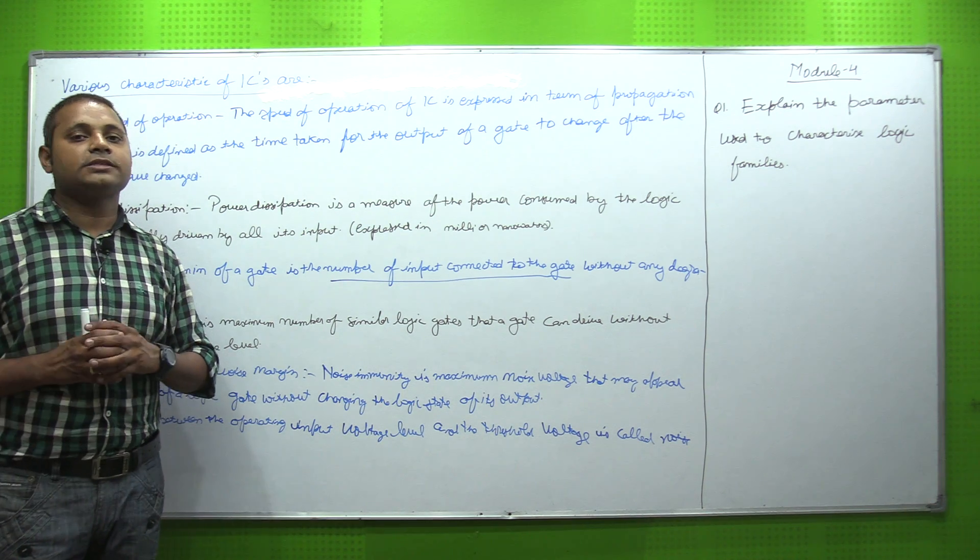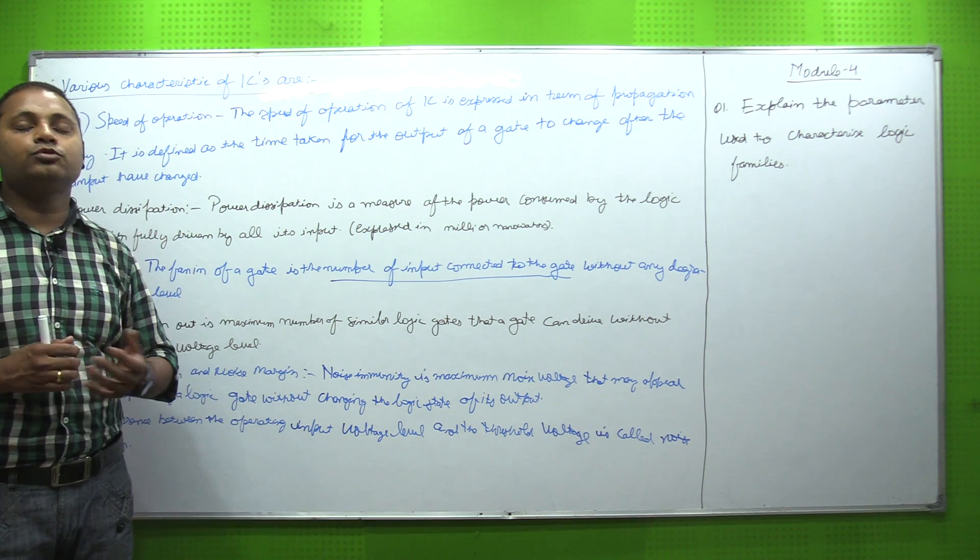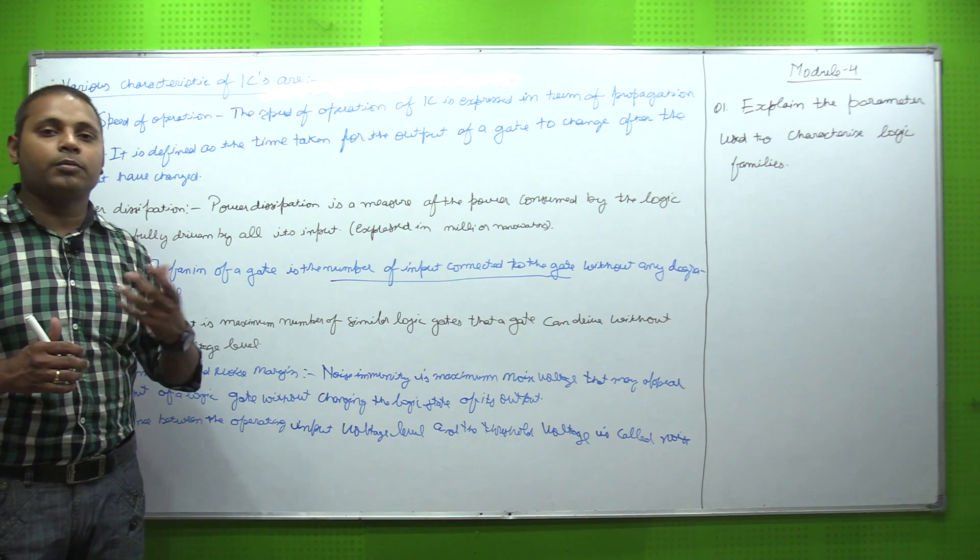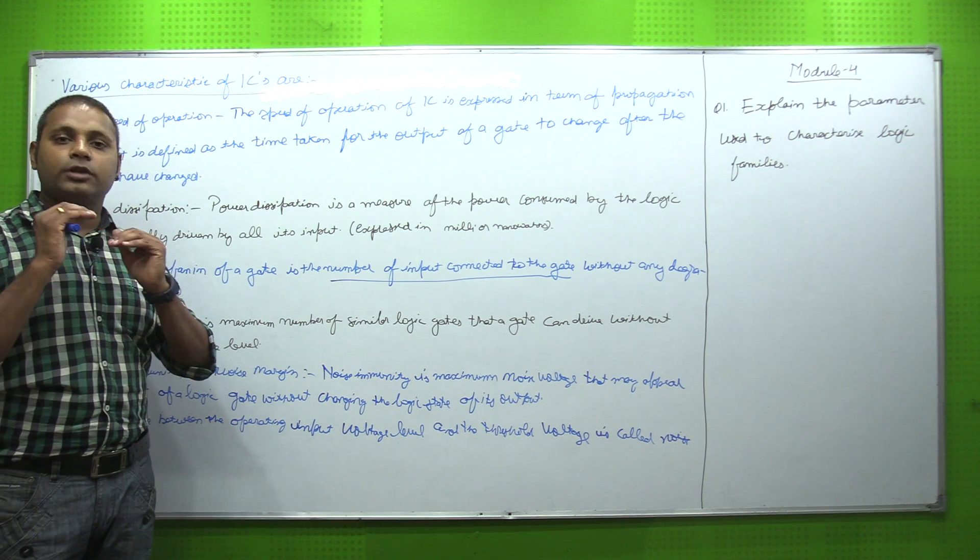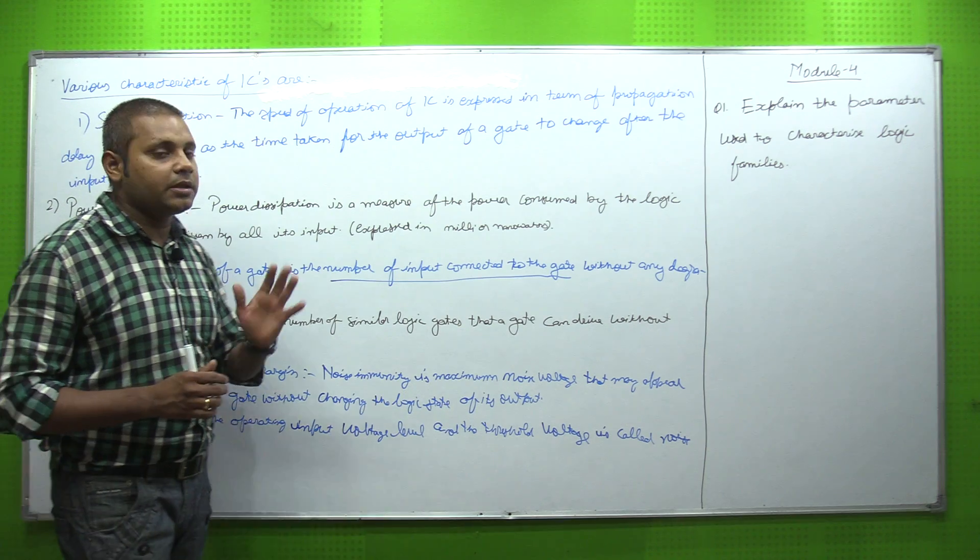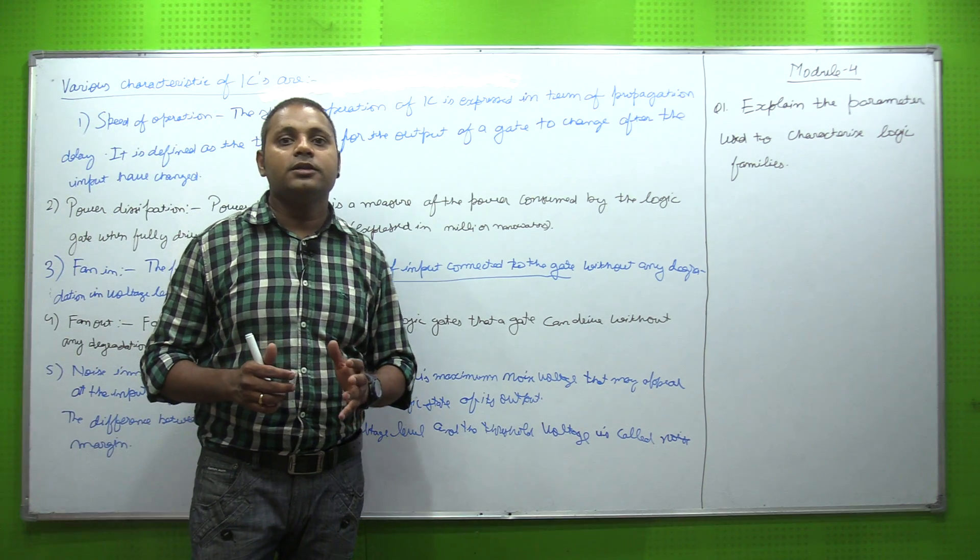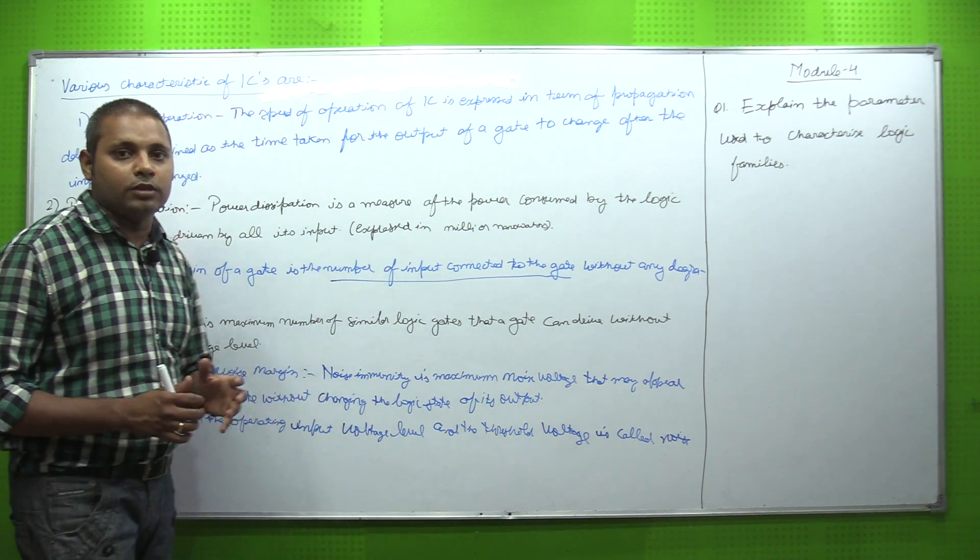Generally, threshold voltage is defined as the minimum voltage to switch on a particular gate or IC. Threshold voltage means the minimum voltage at which any circuit starts to operate. That is the threshold voltage.